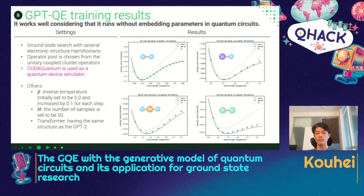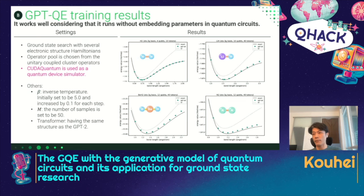Another question from Quantum Palace: by exact calculation, do you mean exact diagonalization? There are no analytical solutions for these kinds of Hamiltonians as far as I know. Yes, exact diagonalization — that's true. Because this is a simulation and the system size is not so large, we can perform exact diagonalization.